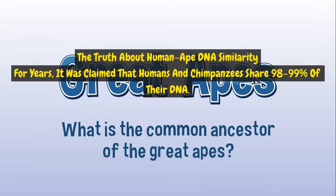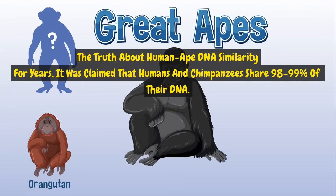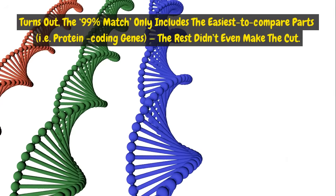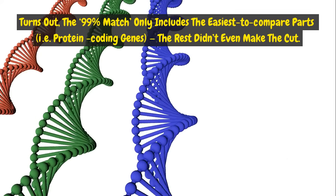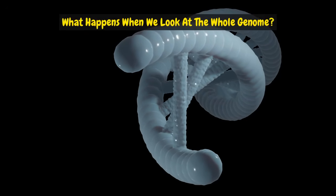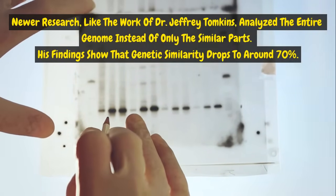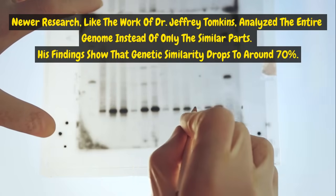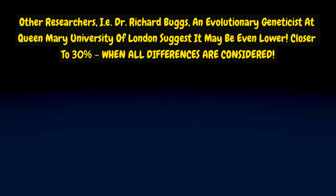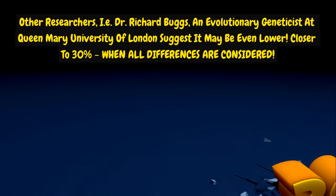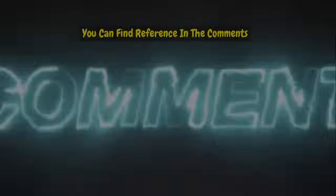The truth about human-ape DNA similarity: for years it was claimed that humans and chimpanzees share 98–99% of their DNA. It turns out the 99% match only includes the easiest-to-compare parts — protein-coding genes — and the rest didn't even make the cut. Newer research, like the work of Dr. Jeffrey Tompkins, analyzed the entire genome instead of only the similar parts, and his findings show that genetic similarity drops to around 70%. Other researchers, such as Dr. Richard Buggs, an evolutionary geneticist at Queen Mary University of London, suggest it may be even lower — closer to 30% when all differences are considered.